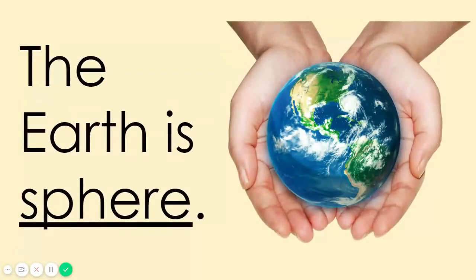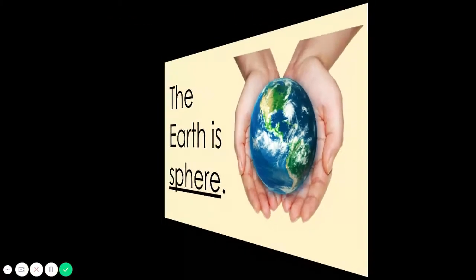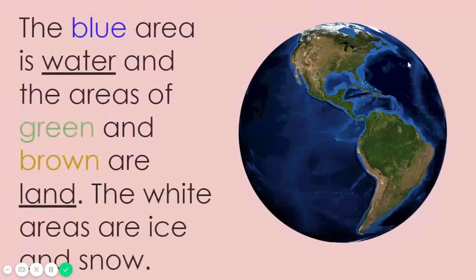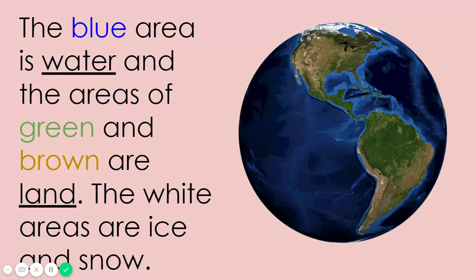The Earth is sphere. The globe is the model of the Earth. The blue area is water, and the areas of green and brown are land. The white areas are ice and snow.